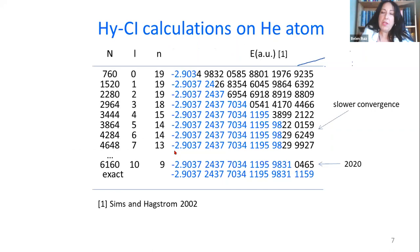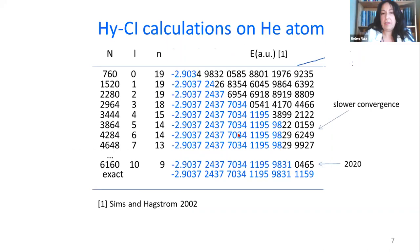The slowdown in the Hylleraas CI calculations of the helium atom was shown by Simms and Hanson in 2002. Their calculations are very accurate — about 18 decimal digits — but there is a slow convergence in the region of G and H orbitals. This may be due to a missing double CUSP, meaning terms containing R12 and R34 at the same time.